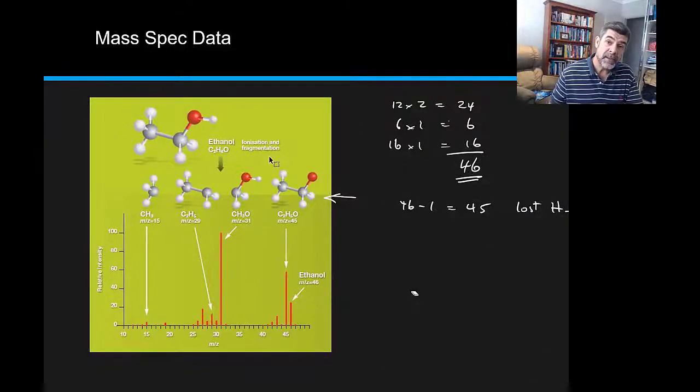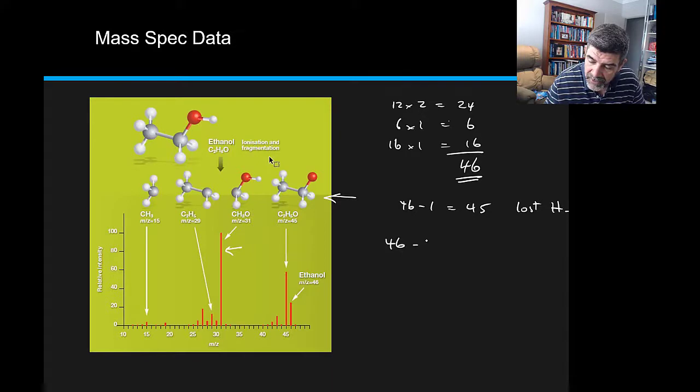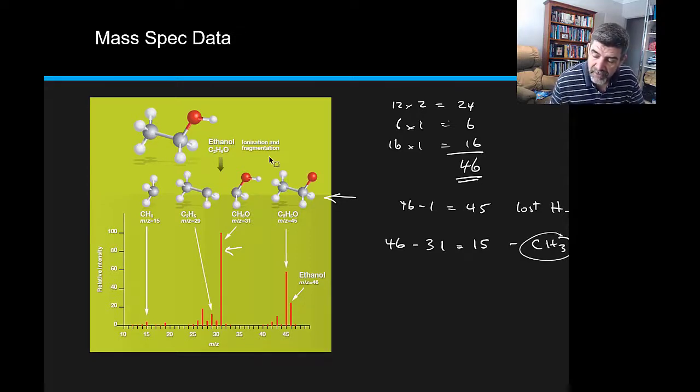So the next big peak we see is this peak at 31. So let's take our molecule and subtract 31 and what we get is 15. Now you might remember from the previous slide, 15 is what we get from a methyl group, a CH3 group. So that indicates that somewhere along this fragment we've had a CH3 group break off it.